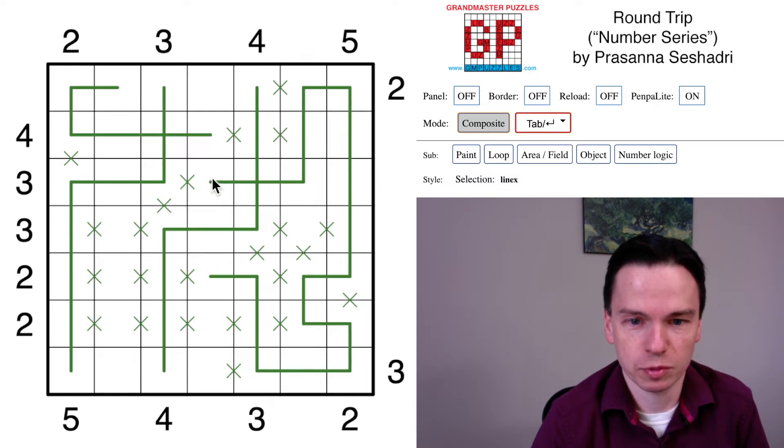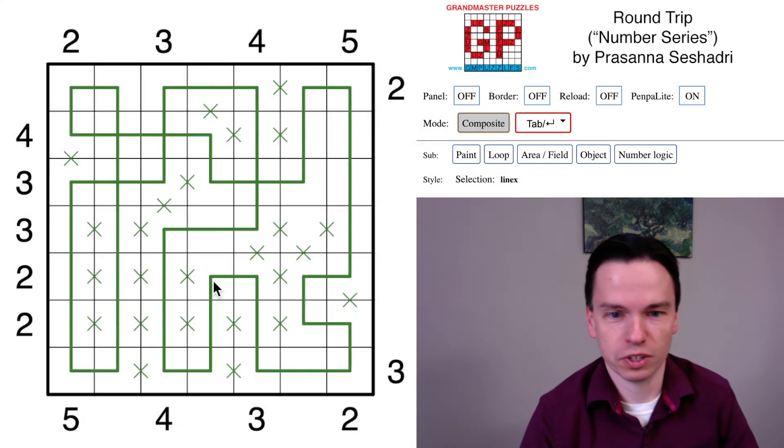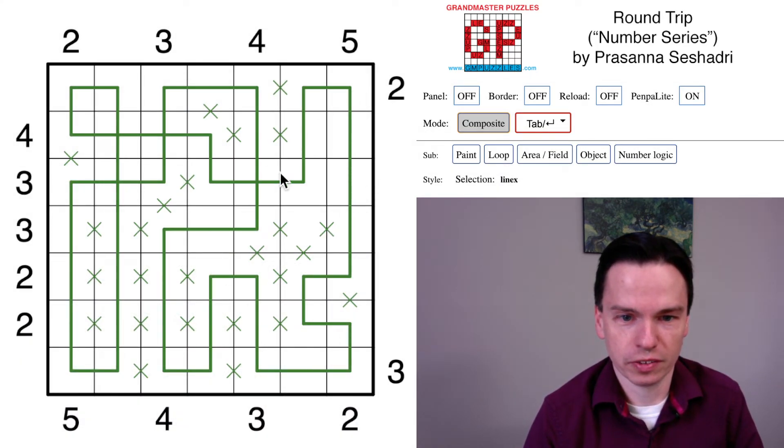If this came down, that would close off the loop. So this has to go up, this end has to come down, it comes here and closes. So this now comes through this channel, crosses over, and these come across. And we've now finished the one loop that goes all the way around the grid and fulfills all the outside clues.